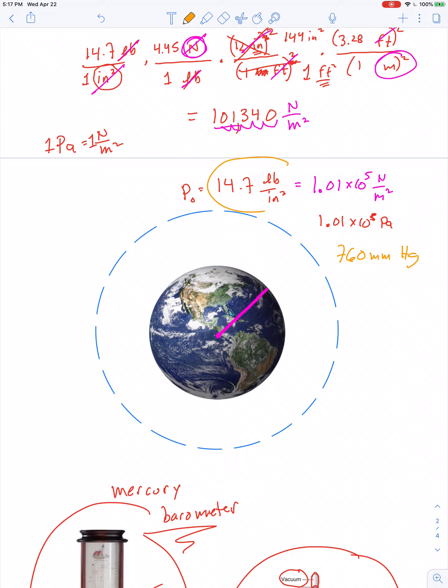So for now, there are one, two, three values you can associate with atmospheric pressure.